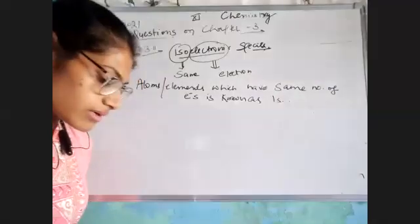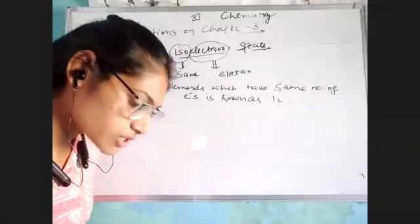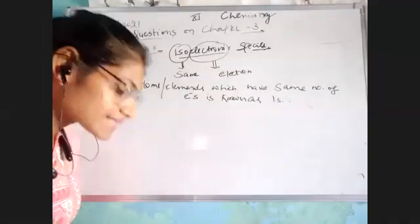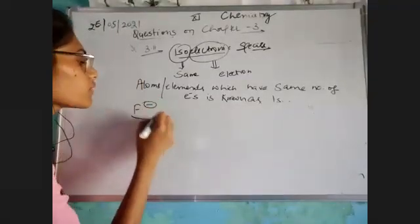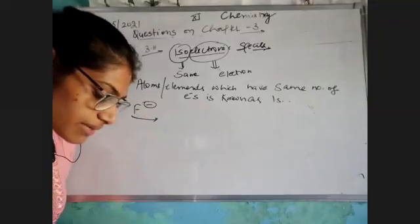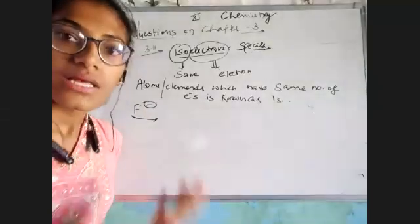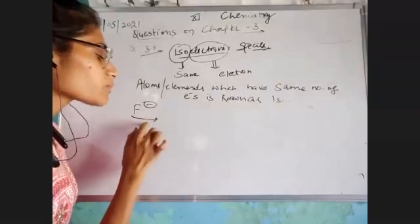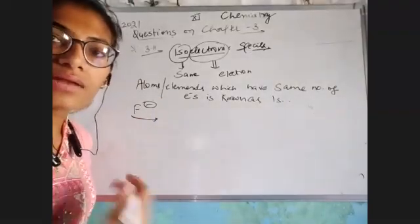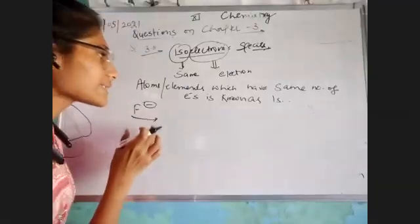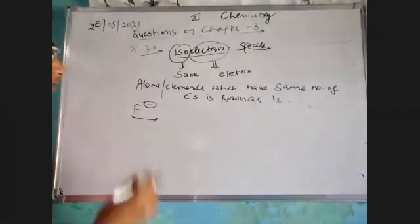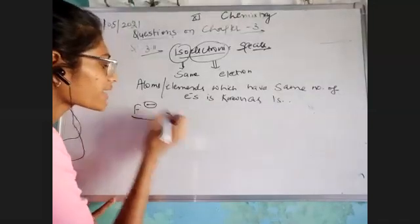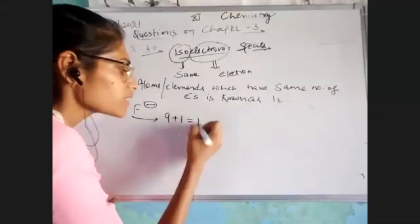For example, consider this question: name the species that will be isoelectronic with each of the following atoms or ions. The first one given is F⁻. We need to know what is isoelectronic with this particular atom. First, let's write the atomic number of fluorine. Fluorine has a total of nine electrons, and one negative charge means it has a total of 10 electrons.